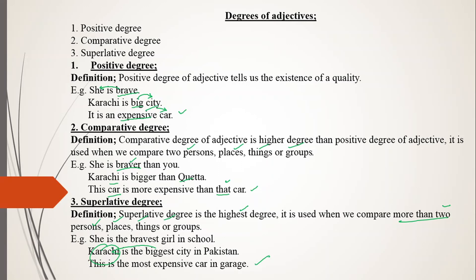Now remember — 'brave' has one syllable, 'big' has one syllable, 'expensive' has three syllables. If an adjective has one syllable, you form the comparative with 'ER' and superlative with 'EST' — like big, bigger, biggest, and brave, braver, bravest. But 'expensive' has three syllables, so you use 'more' in comparative and 'most' in superlative. These will be discussed further in coming lectures. Hope you got today's lecture — wish you best of luck, see you next time. Goodbye.